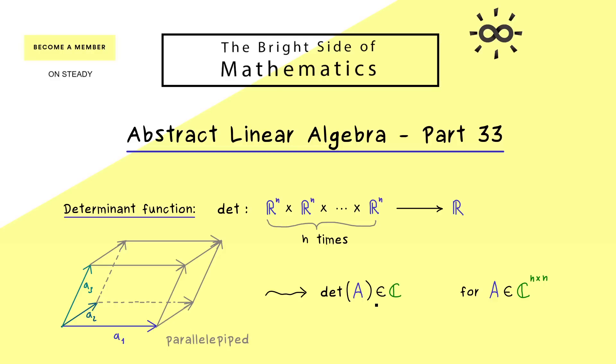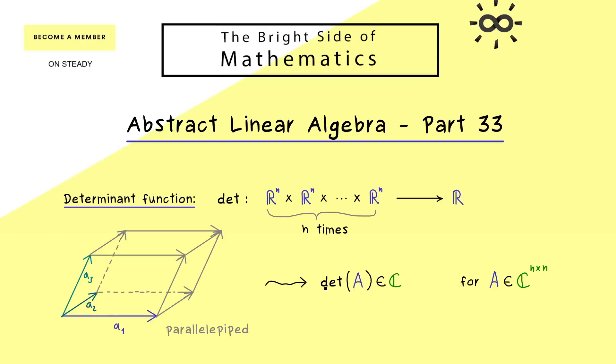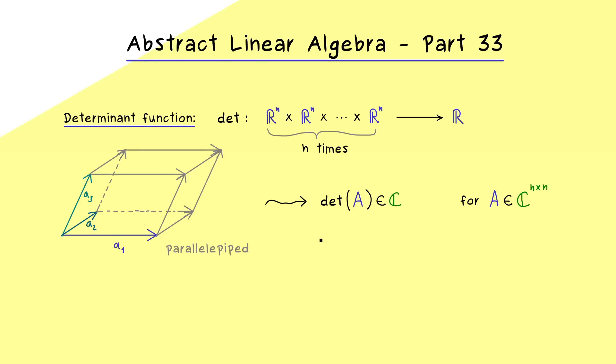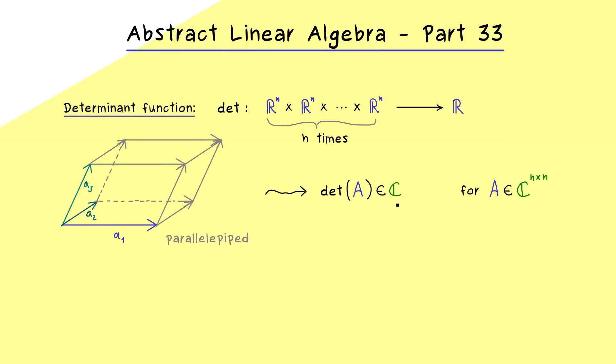Ok, so please don't forget, the determinant can be used for a lot of different things. But the most important part is, that it can tell us if a matrix is singular or not. And for example, this fact can be used to calculate eigenvalues of a square matrix. Therefore, it will be really helpful to extend the definition of the determinant to linear maps as well.